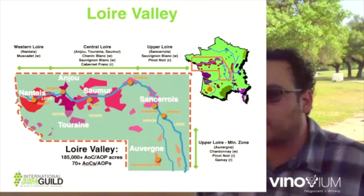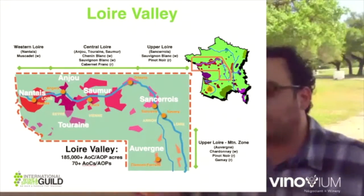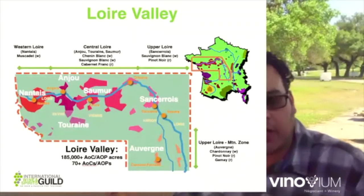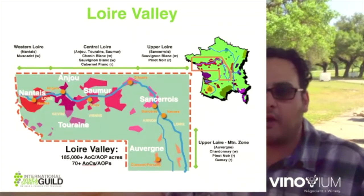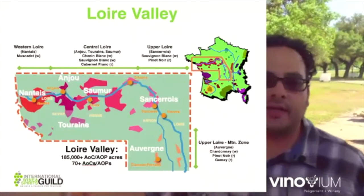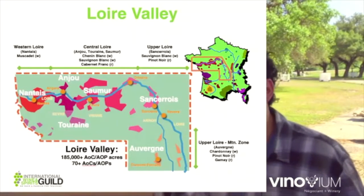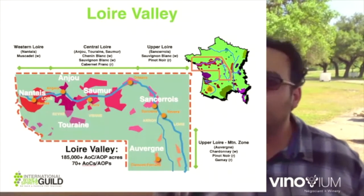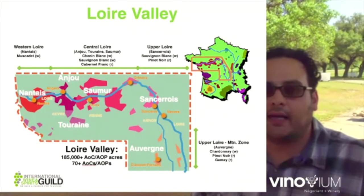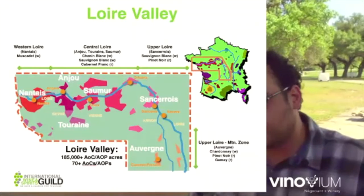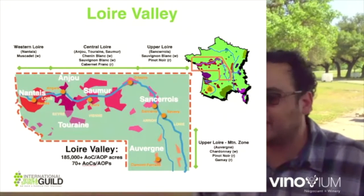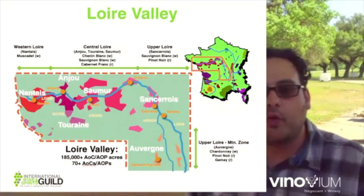The Loire Valley is historically super famous for its access to nobility. The town of Orléans is about 90–100 miles south of Paris. During the summer months, it was a vacation spot for the nobility and aristocracy. Paris, being a hot and swampy town before air conditioning, didn't lend itself to comfortable summers, so there was a migration of people throughout the Loire Valley for centuries, which led to a high level of sophistication in both wine production and food culture.